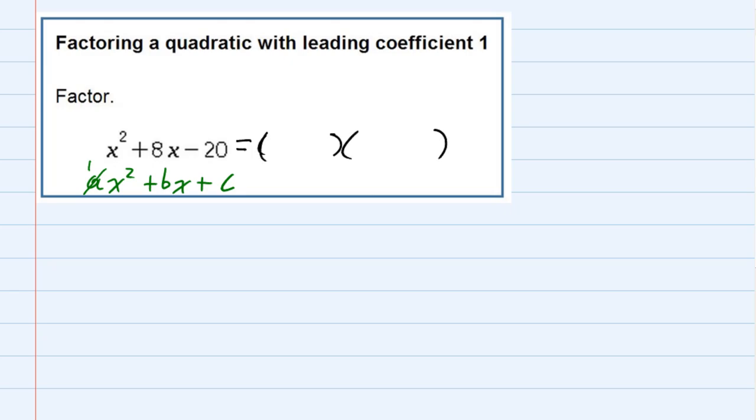Two binomials. And since the leading term is x squared, that only gives us one choice for the beginning - it has to be x and x. And to find the rest of these, that's where we have to be a little bit more careful.